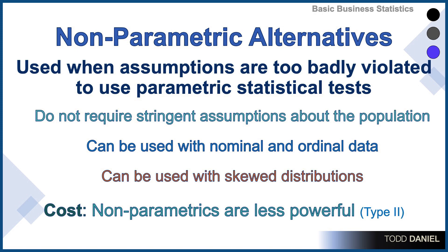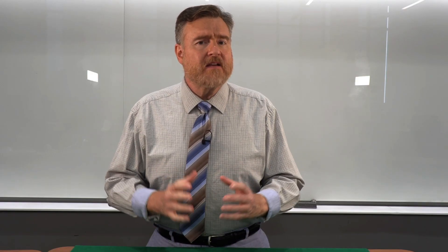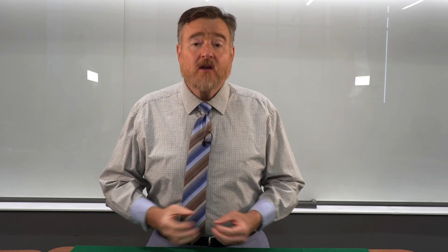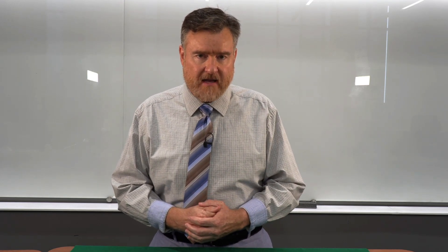Non-parametric tests work because they do not require the stringent assumptions about the population that parametric tests do. Non-parametrics can be used with nominal or ordinal data, and they can be used with skewed populations. However, all of this flexibility comes at a cost, and that cost is that non-parametric tests are less powerful than parametric tests. That means you're more likely to make a Type 2 error — you're likely to miss an effect that is truly there.